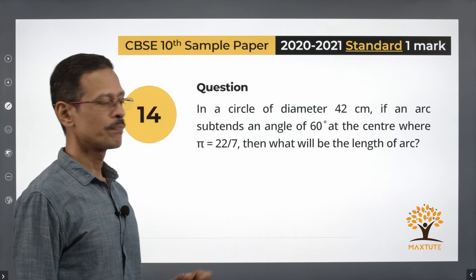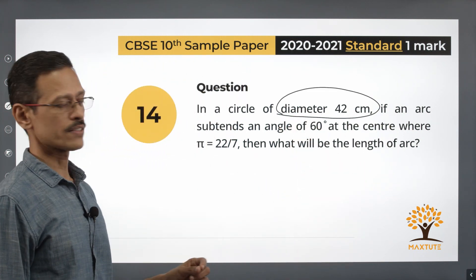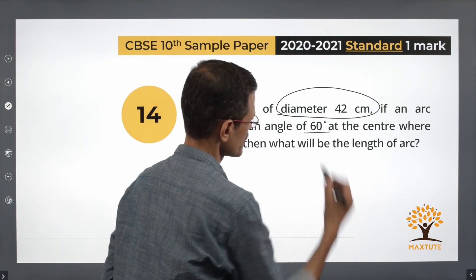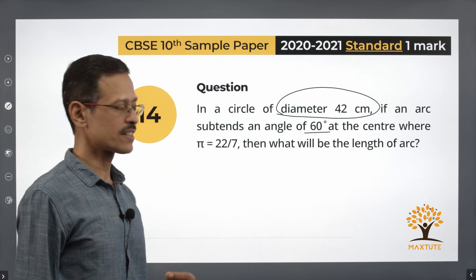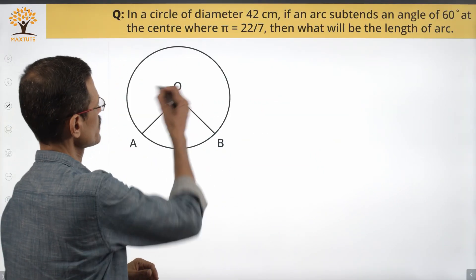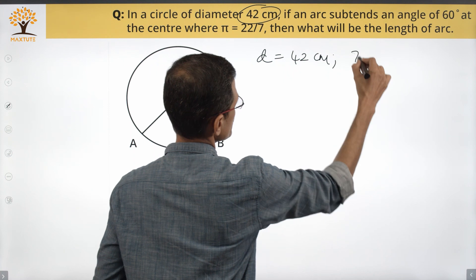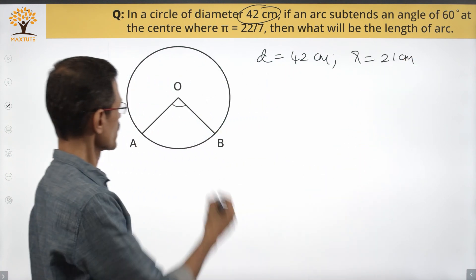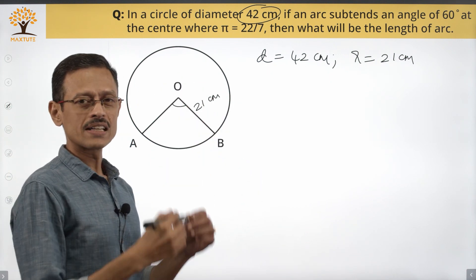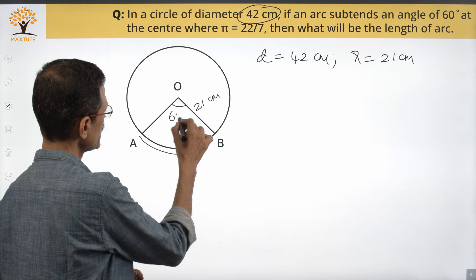Question 14 is from circles. A circle has a diameter of 42 centimeters — note it's the diameter, not the radius. An arc subtends an angle of 60 degrees at the center, and pi equals 22/7. We need to find the length of the arc. Drawing the circle, the radius equals 21 centimeters. We need to find the length of arc AB, which subtends 60 degrees at the center.